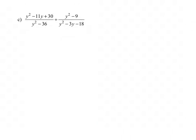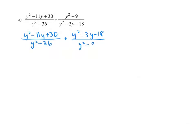Let's take the rational expression: the quantity y squared minus 11y plus 30 divided by the quantity y squared minus 36, all divided by the rational expression with y squared minus 9 in the numerator and y squared minus 3y minus 18 in the denominator. Begin by writing this division problem as a multiplication problem. We have y squared minus 11y plus 30 in the numerator and y squared minus 36 in the denominator, then change the division sign to multiplication and write y squared minus 3y minus 18 in the numerator and y squared minus 9 in the denominator. Now factor each of those parts.